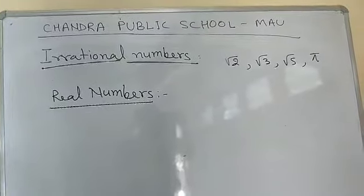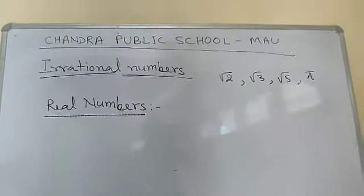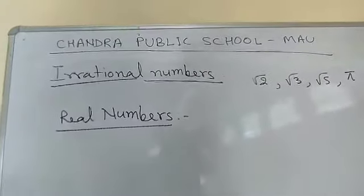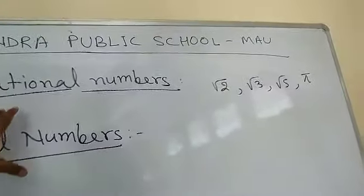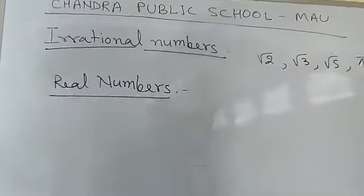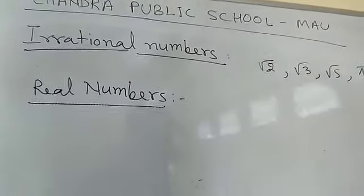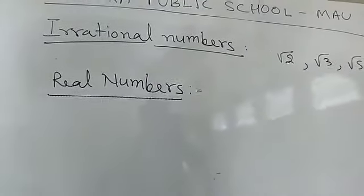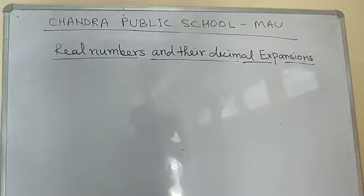Next is real numbers. The combination of both rational and irrational numbers is called a real number. It means if rational and irrational numbers are collectively taken, they are called real numbers.